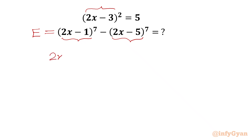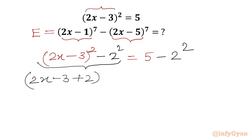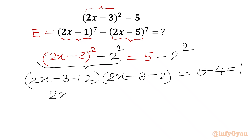Starting from (2x − 3)² = 5, I will subtract 4 from both sides, writing it as (2x − 3)² − 2² = 5 − 4. Applying the a² − b² formula, we get (2x − 3 + 2)(2x − 3 − 2) = 1, which simplifies to (2x − 1)(2x − 5) = 1.